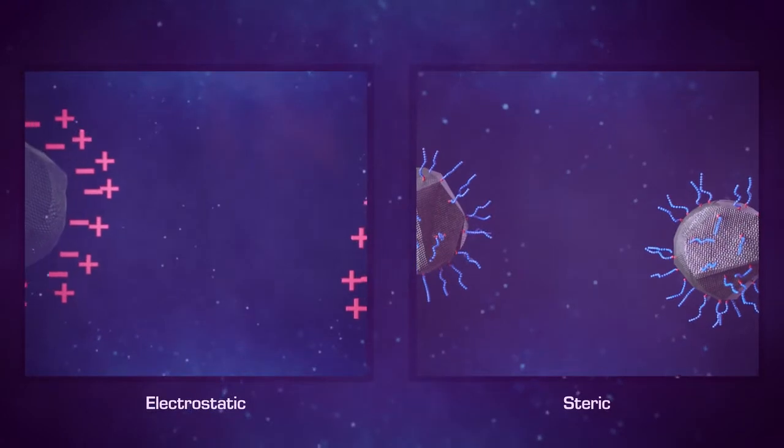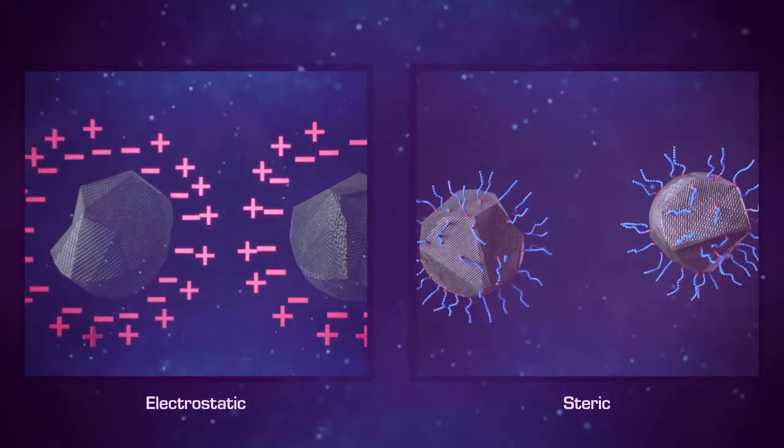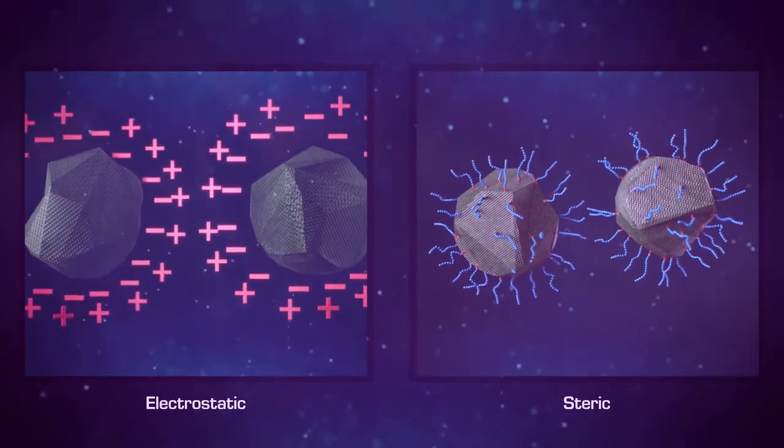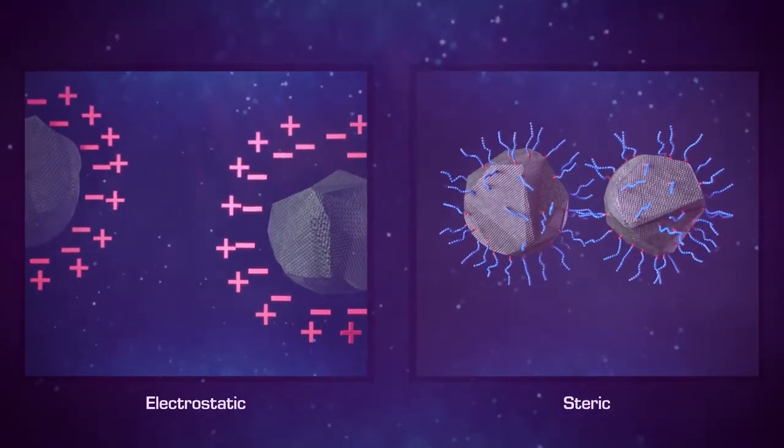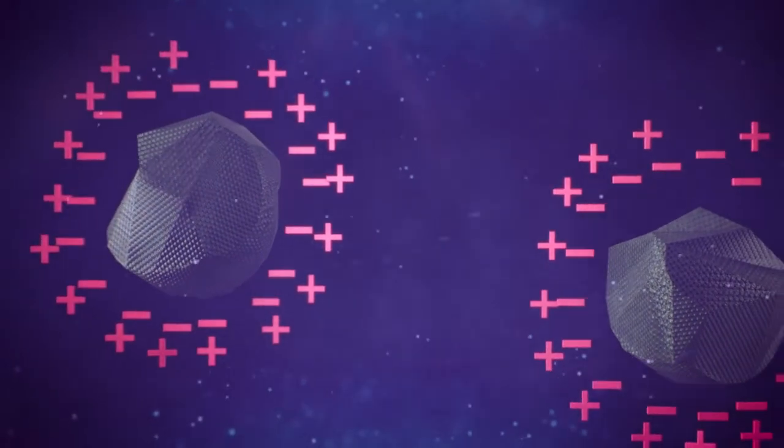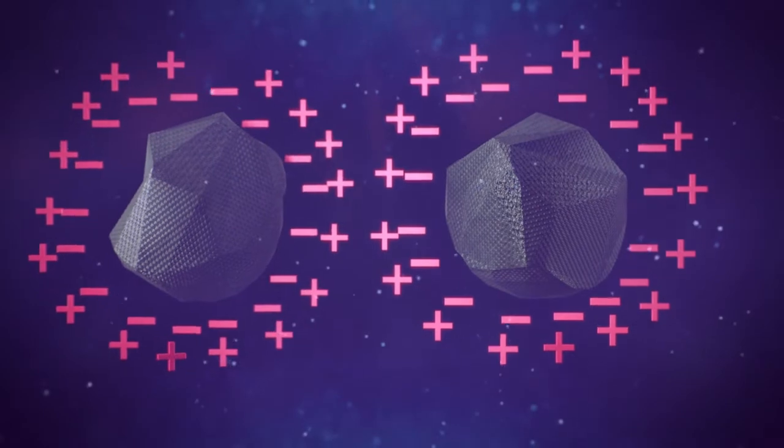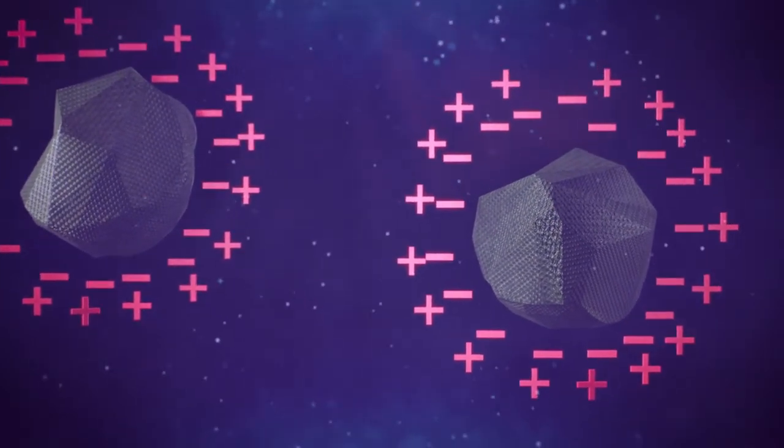This stabilization of pigments in a medium can be accomplished using multiple methods, including the two main types: electrostatic and steric stabilization. Electrostatic stabilization, also known as charge stabilization, uses electromagnetic forces to achieve particle separation. It is effective only in high polarity systems like water.